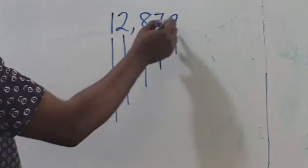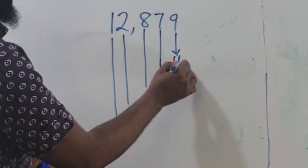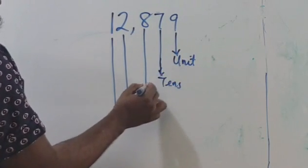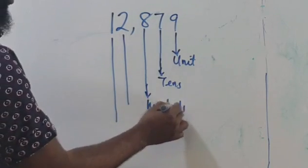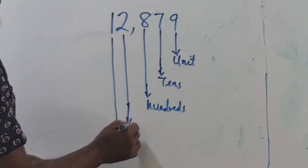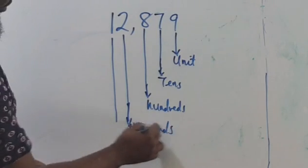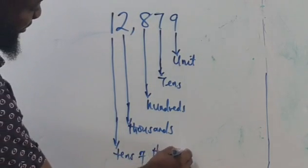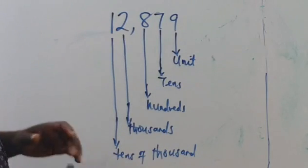If you look at the value of this one, it's units — the last digit here is under units. While this one is under tens, while this is under hundreds, and this is under thousands, while the last one here has the value of ten thousands.